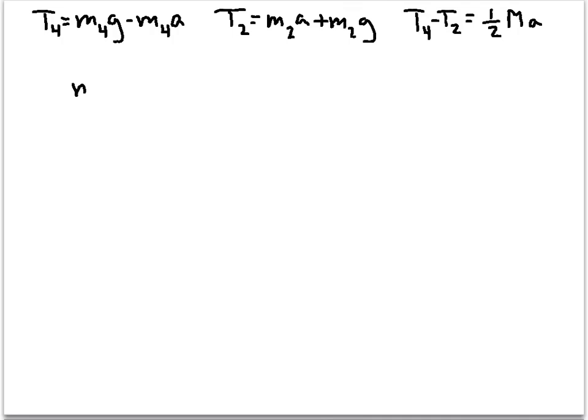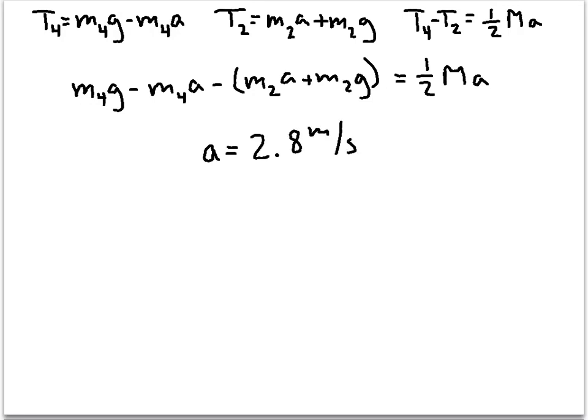So if we do that, we get M4G minus M4A minus the quantity M2A plus M2G equals one half the mass of the pulley times our acceleration. Now if we solve for acceleration and plug in all of our numbers, you get 2.8 meters per second squared.